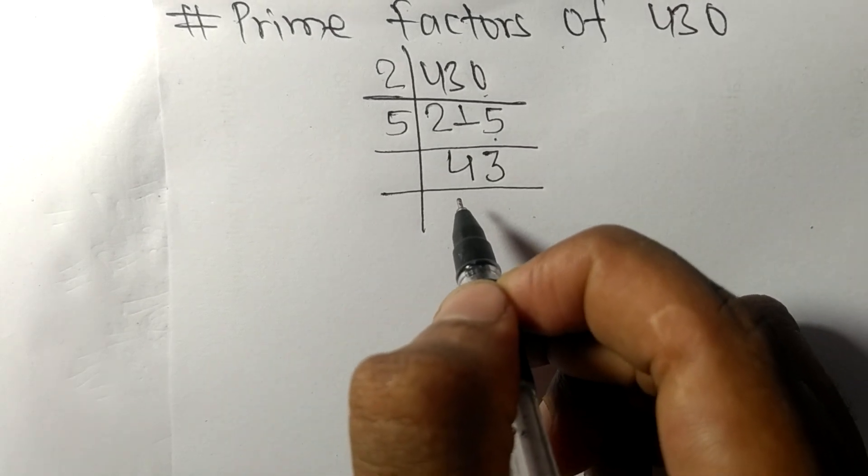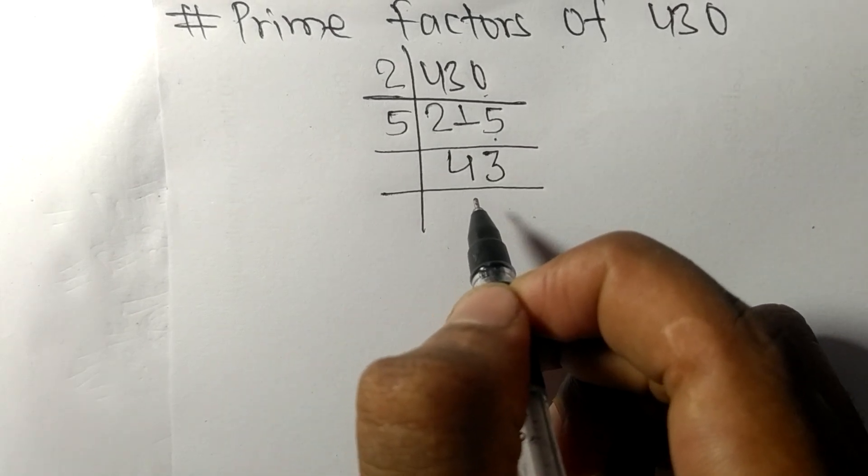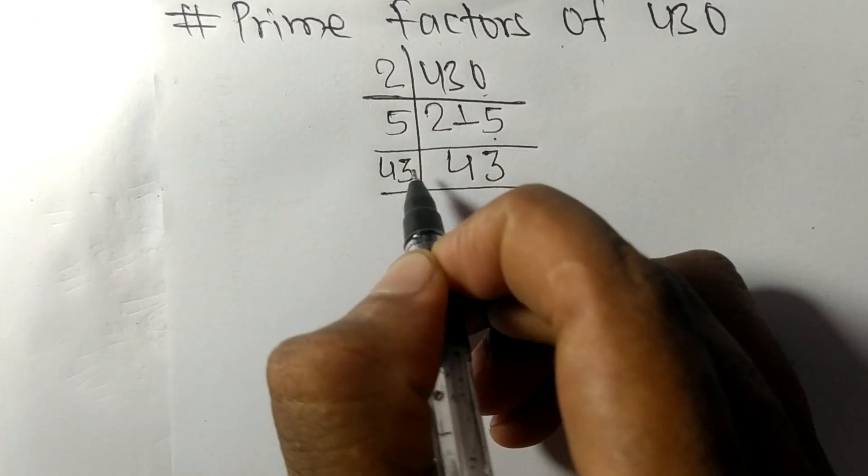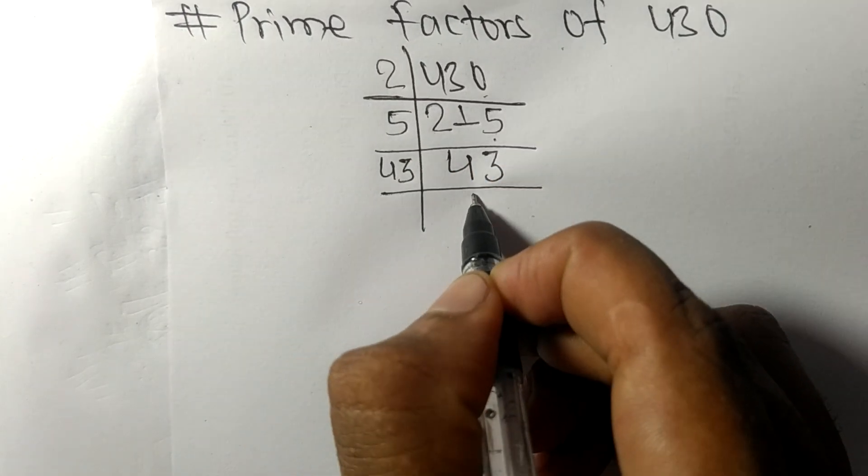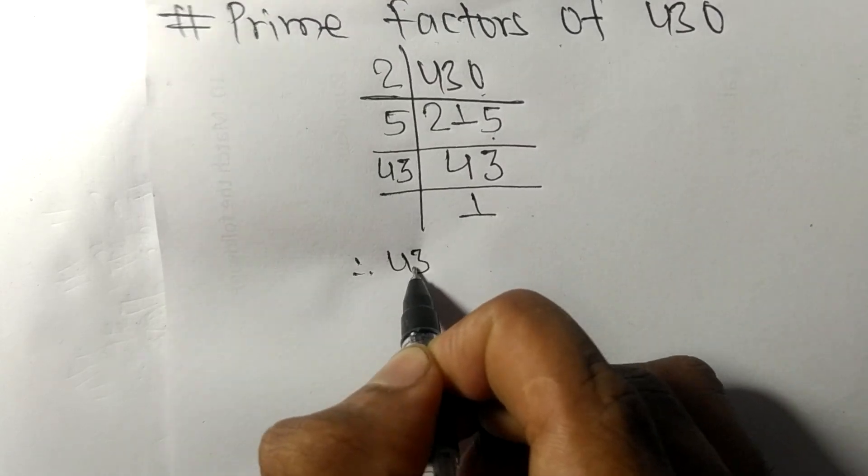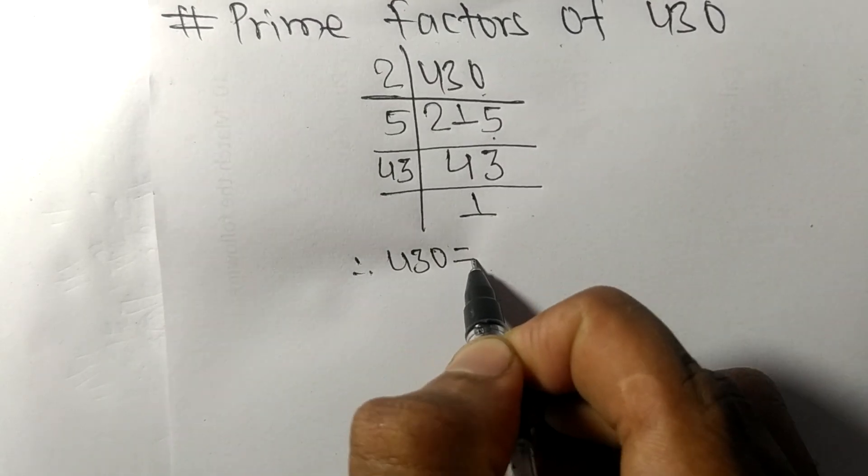Now we got here 43 which is a prime number, so it is divisible by 43 itself and we get here one. Therefore, 430 is equal to...